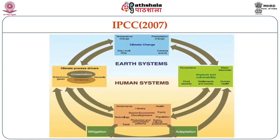Now look at this slide from the Intergovernmental Panel on Climate Change — it is a wonderful slide; you need to study it very carefully. I will explain at an introductory level, but you can do an exercise — write half a page on this slide. Look at this interaction between earth systems and human systems. You can see words like mitigation, adaptation, governance, and technology — these all come under human systems, but certain things overlap.